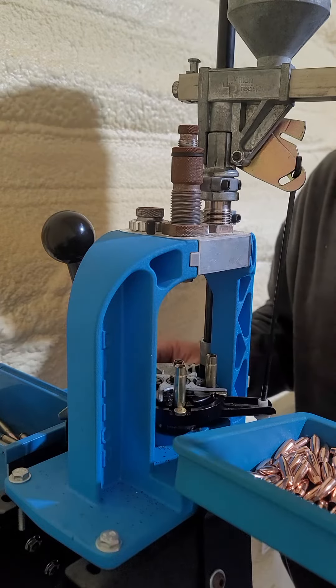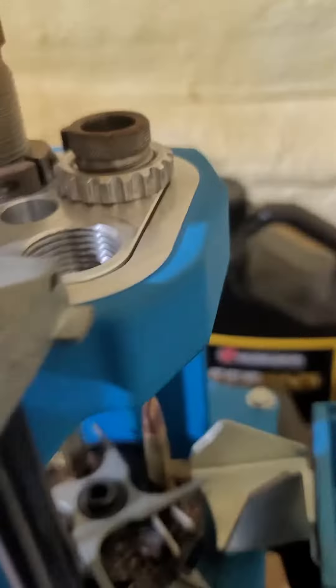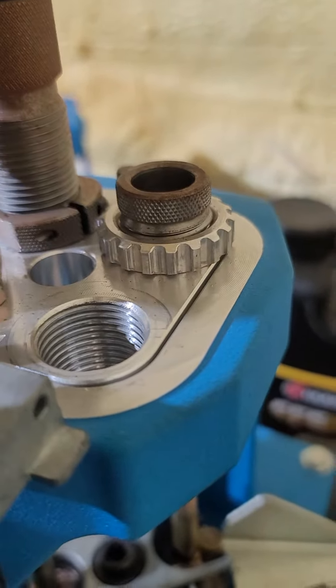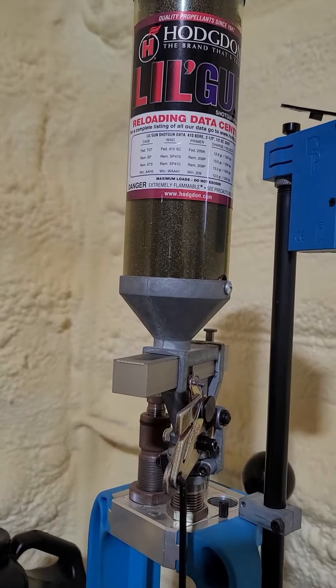So I'll show y'all. What I got here, you see that last station is a crimp station. The other one is a bullet setter and I've got powder.